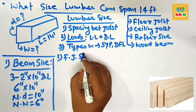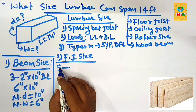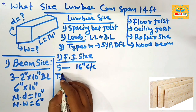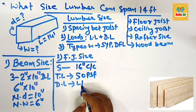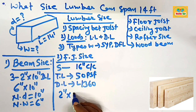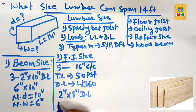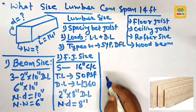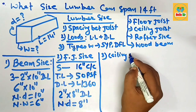For the floor joist size required to span 14 feet, the conditions are: spacing of 16 inches on center, a total load of 50 pounds per square foot, and a deflection limit of L/360. Under these conditions, you can use 2-inch by 8-inch dimensional lumber as the floor joist, with a nominal depth of 8 inches.